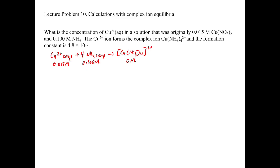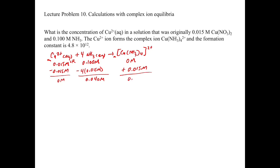Since copper 2+ is the limiting reagent, we subtract all 0.015 molar, leaving 0 molar Cu2+. For ammonia, we subtract 4 times 0.015 = 0.060 molar, leaving an excess of 0.040 molar NH3. Because there's a one-to-one ratio between Cu2+ and the complex, the complex ion concentration becomes 0.015 molar.